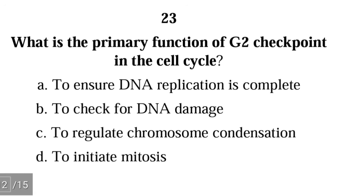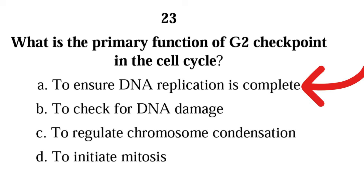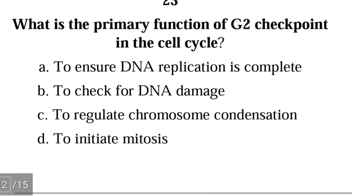Question 23: What is the primary function of the G2 checkpoint in the cell cycle? A) to ensure DNA replication is complete, B) to check for DNA damage, C) to regulate chromosome condensation, D) to initiate mitosis. The correct answer is A) — to ensure DNA replication is complete.